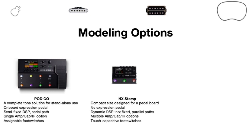Then we get to our HX Stomp, which is a compact size designed to fit right on your pedalboard. It doesn't have any built-in expression pedals, but you can add up to two external ones. It has what we call dynamic DSP, so you're free to put whatever you want in that signal chain — whether you want to run six effects, or maybe two amps plus some effects, or two amps and two cabs. You also have the option of parallel paths, so its routing can get a little more complex and studio-esque than Pod Go. There are also touch capacitive foot switches — you can touch those to assign effects and get into deeper menus.